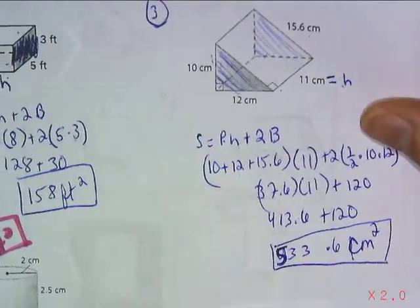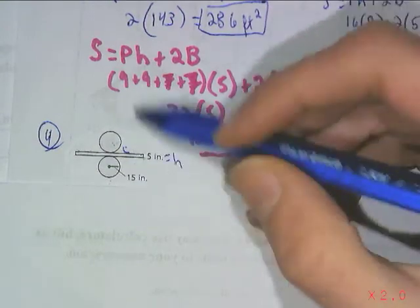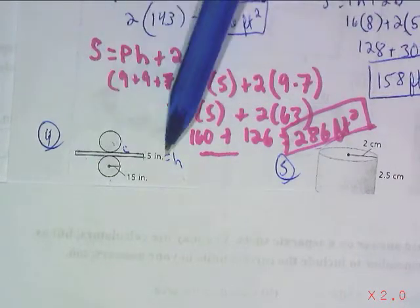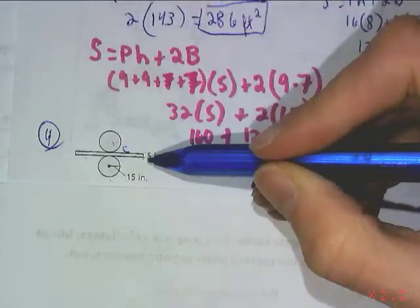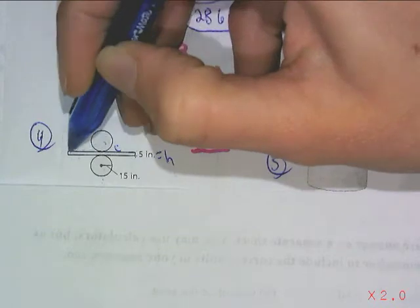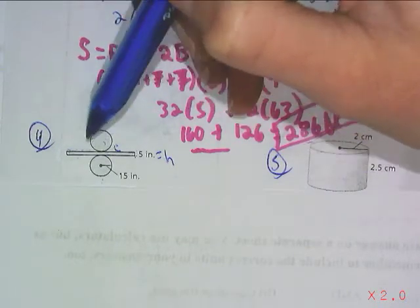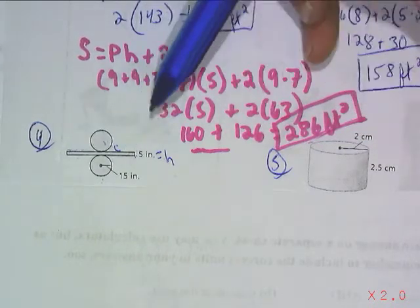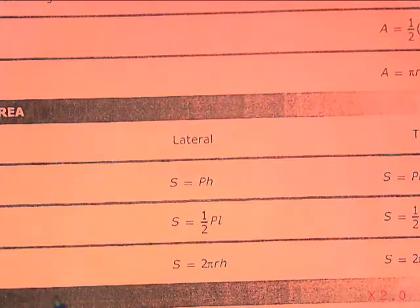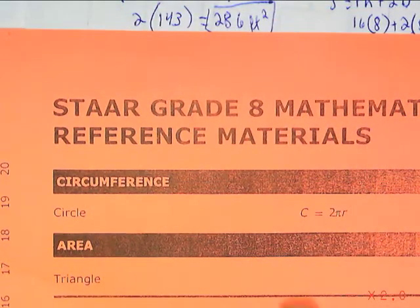Now we're looking at a different shape — it's not a prism because the faces aren't all polygons. It's a cylinder, and what you see is essentially the net of a cylinder: two congruent circular bases, and in between, a long rectangle like a label on a can that goes all the way around as the lateral face. The height of this figure is 5, the distance between the two circular bases. If you unroll that label, its length is essentially the circumference. So circumference times height gives you the lateral area, plus the two circular bases.